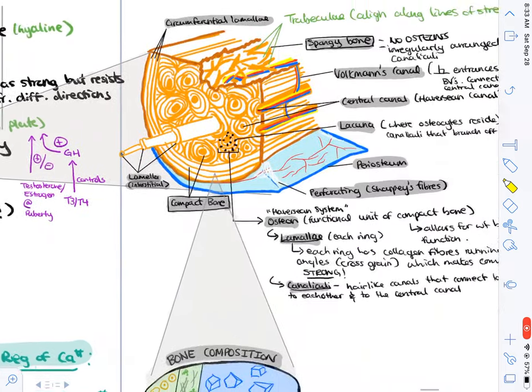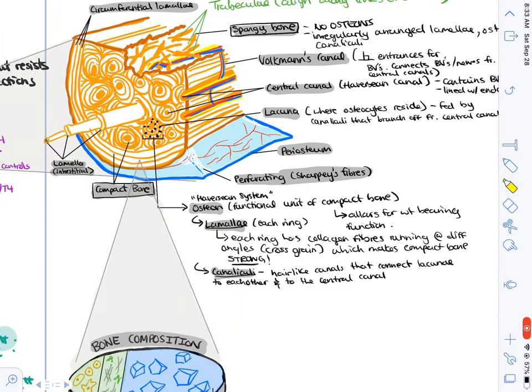The reason why an osteon is strong is because it has this lamellae, which are these concentric circles here. If you expand it, it kind of looks like a telescope. These circles are collagen fibers that are arranged in a very particular way, and of course the way that they're arranged makes the compact bone strong.